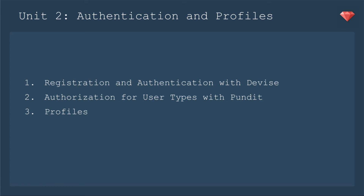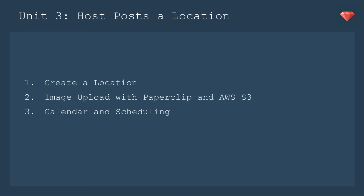In unit two, we'll be implementing authentication and profiles. So we'll build registration and authentication with Devise, authorization for user types with Pundit. And then we will build our profiles for both guests and hosts. In unit three, we'll implement the user story where a host posts a location. So we need to create a location, then upload images of that location with Paperclip and Amazon Web Services S3.